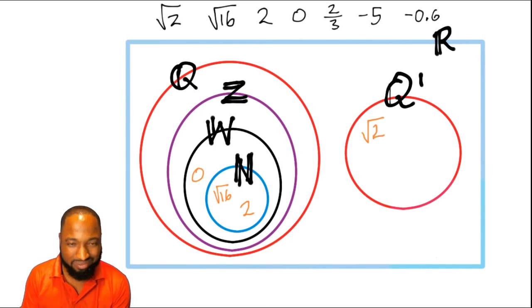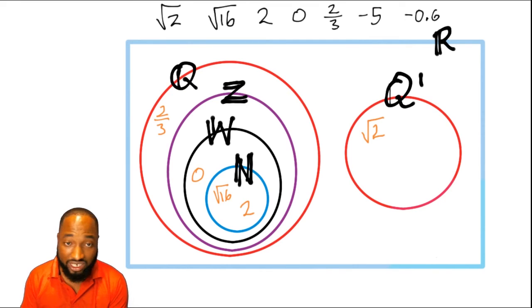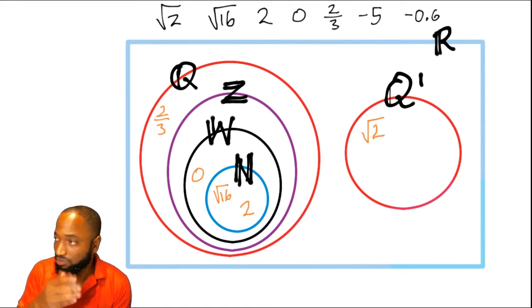What about 2 thirds? Fractions. So that has to be rational. Even though this fraction is recurring, it's rational because we can rationalize it. We understand what's happening.